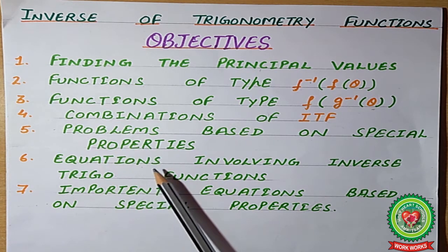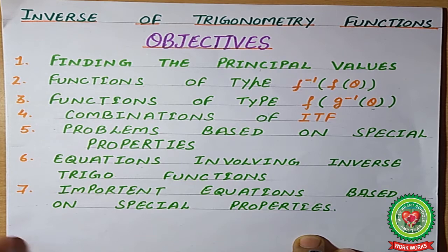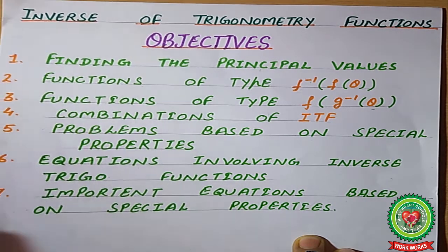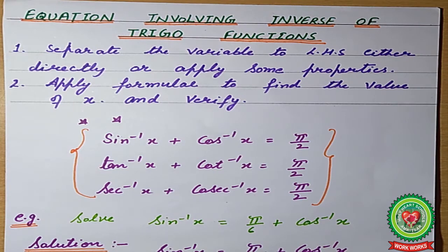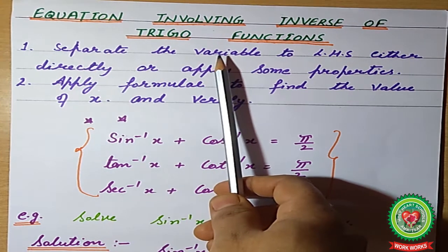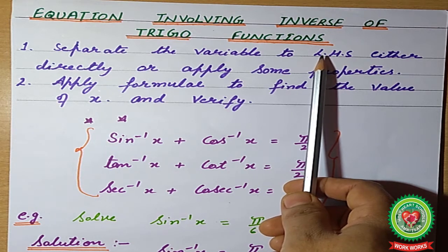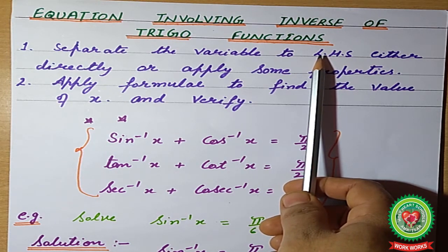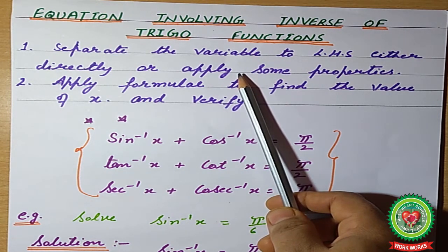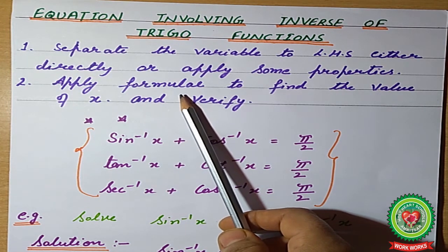In continuation with this topic, today we will learn how to solve equations in inverse trigonometric functions. There are some properties and working tricks we have to follow so that the concept will be very easy. The first trick is to always separate the variable either to the left-hand side or the right-hand side — either directly or by applying some property — then apply the formula from our previous session to find the value of x.